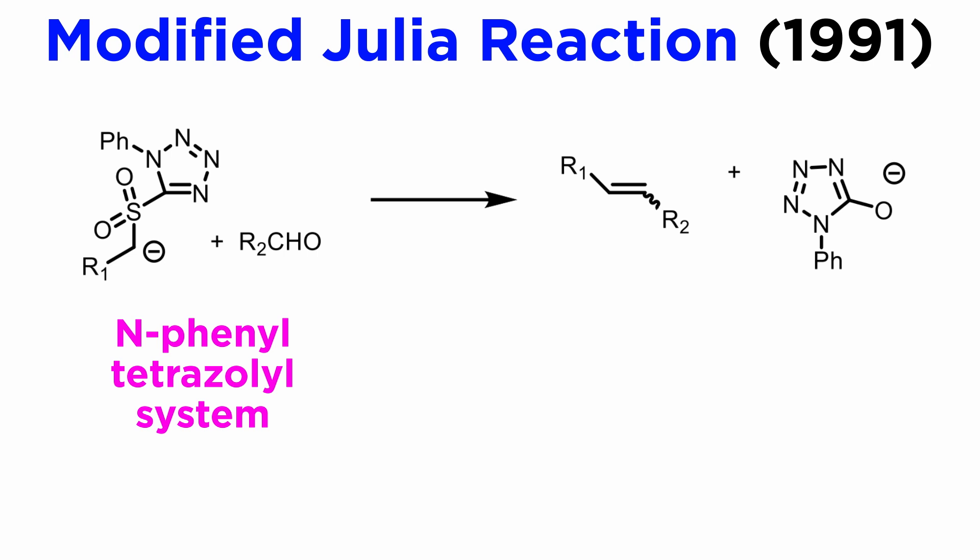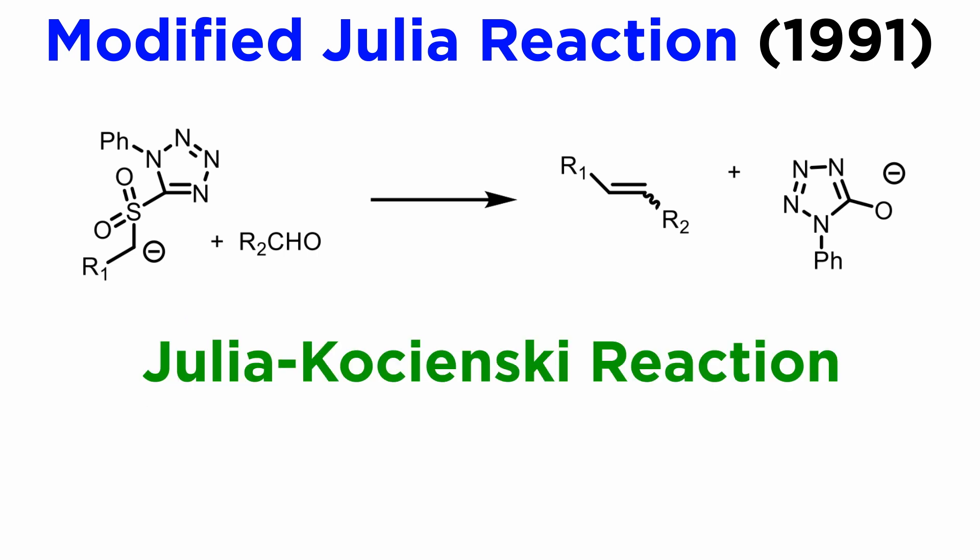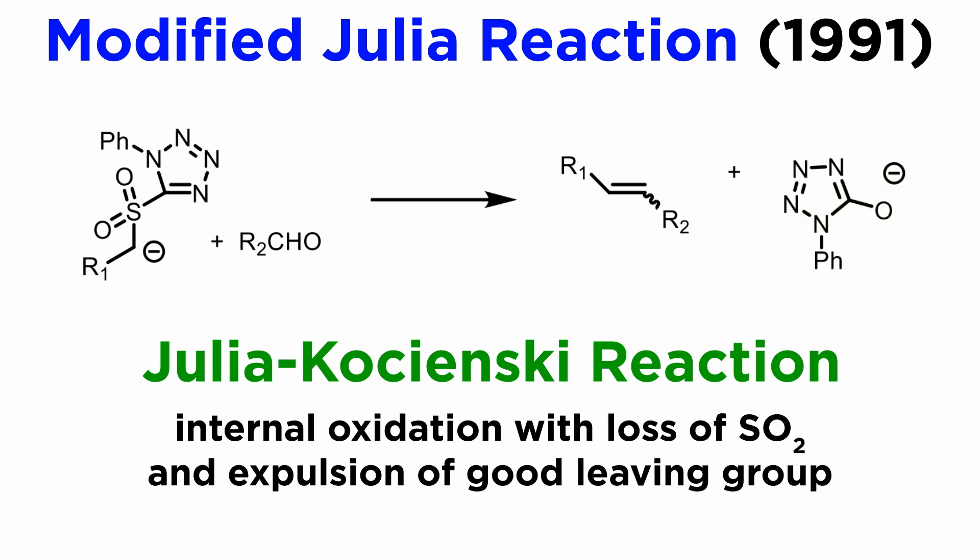This principle has been extended to other heterocyclic systems, the most important one being the N-phenyl tetrazole system. This especially mild and smooth variant of the Julia reaction is called the Julia-Kocienski reaction. In this case, the conjugate base of 5-hydroxy-1-phenyl tetrazole is the leaving group, and the principle is the same as in the modified Julia reaction. The oxidation is an internal process in which the Smiles rearrangement leads to loss of SO2 and expulsion of an especially good leaving group.